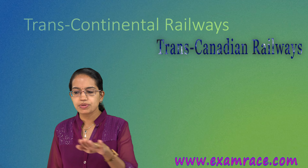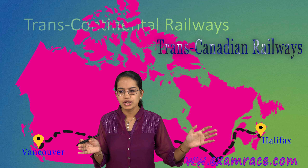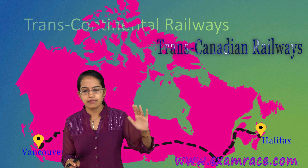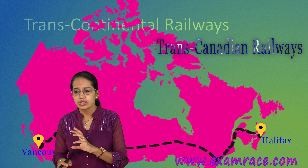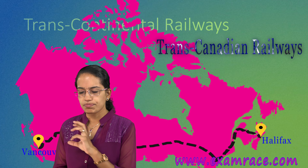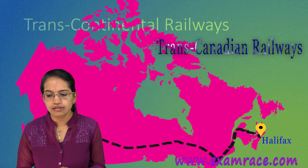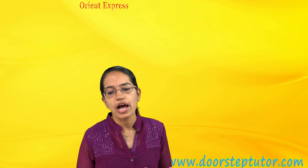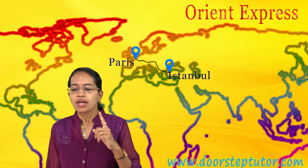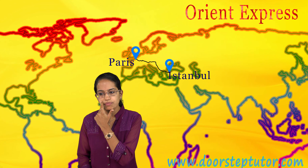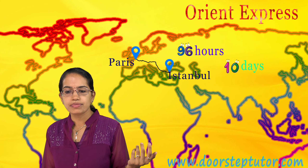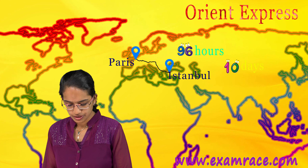The Trans-Canadian Railway traverses Canada from Halifax in the east to Vancouver in the west on the Pacific coast. In North America, wheat fields of the prairies and coniferous northern areas are extensively served. In Australia, the Trans-Continental Australian Railway runs west to east connecting southern towns. The Orient Express runs from Paris to Istanbul, crossing most European countries — its journey reduced from 10 days to just 96 hours.